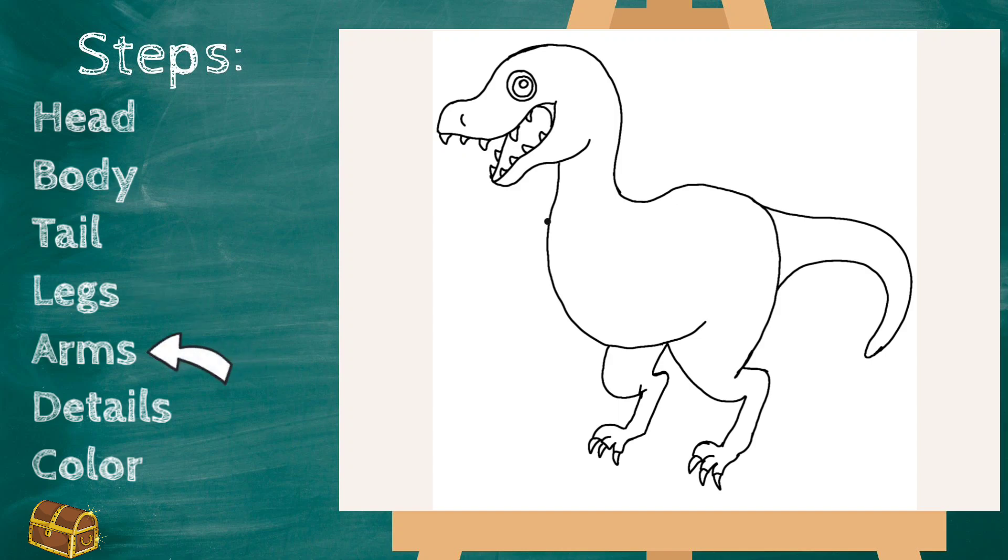Next we will do his arms. And blue has kind of tiny little arms. So start right here where his neck ends. And we're going to curve out like that. And then come down just a little bit. And we'll give him a little elbow. And I just gave him two claws.